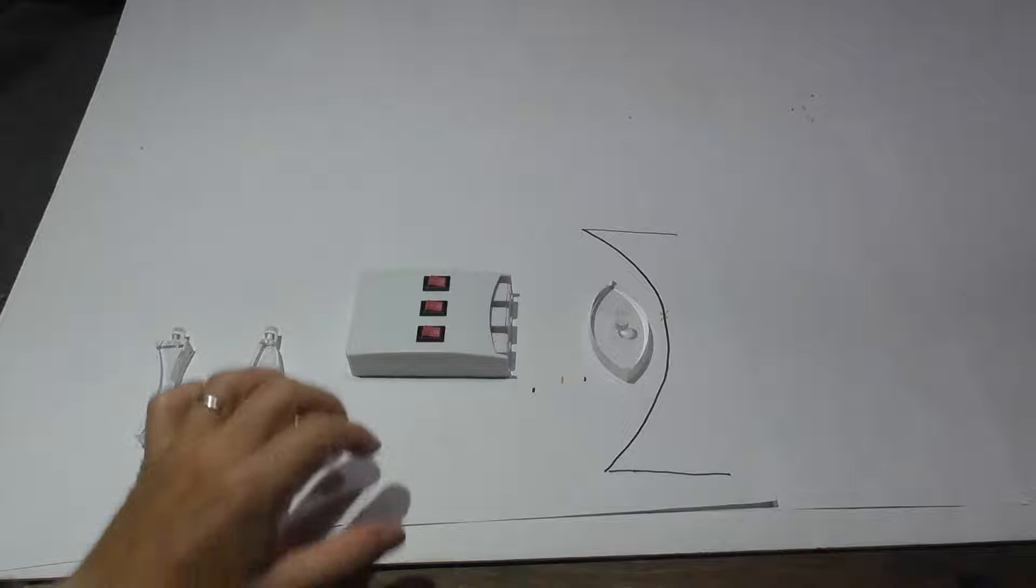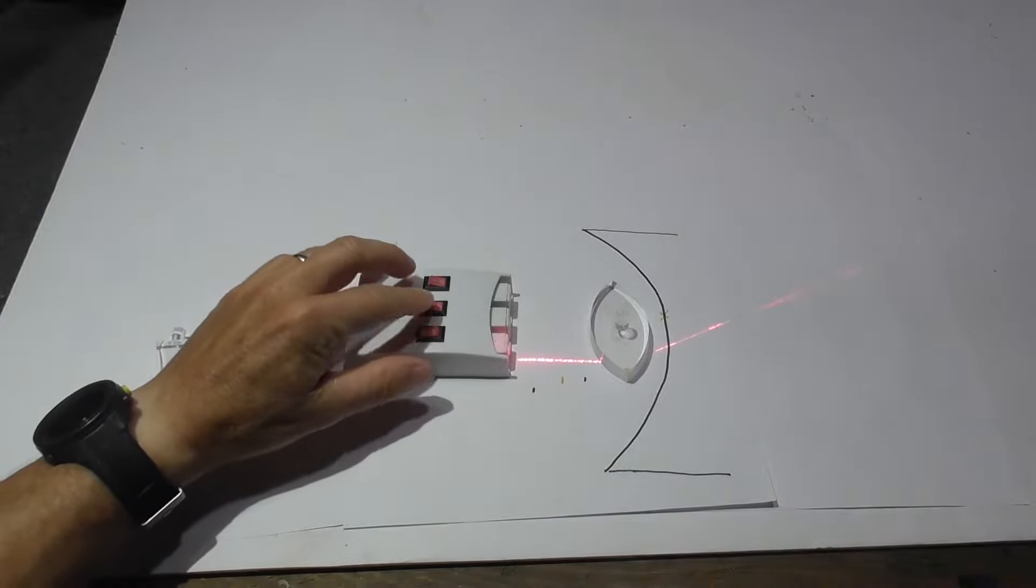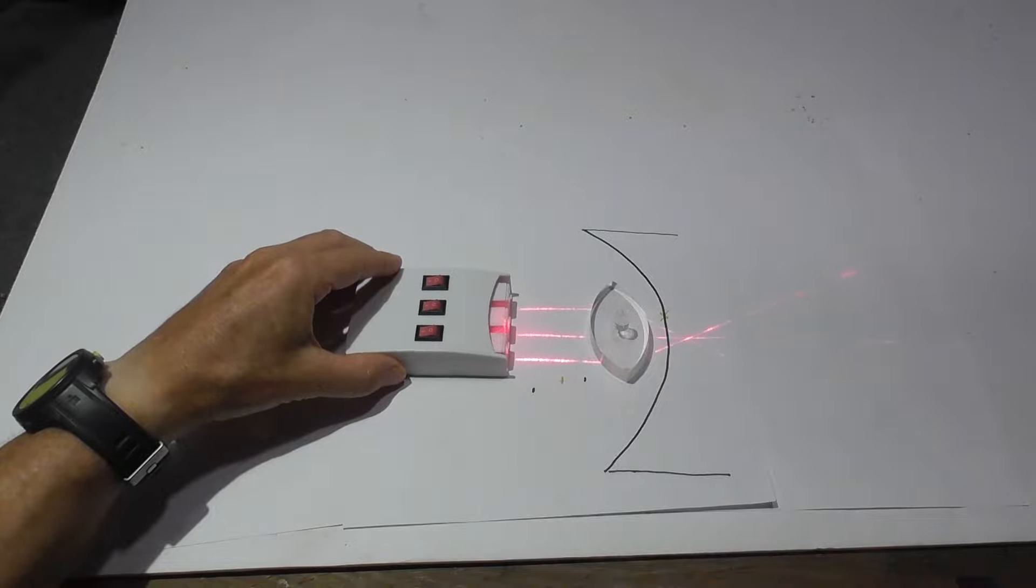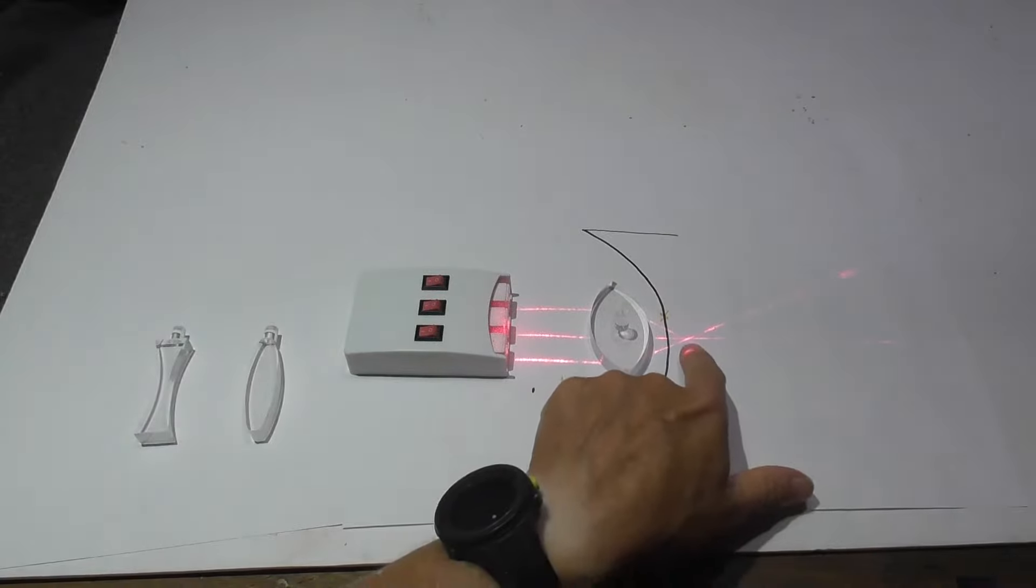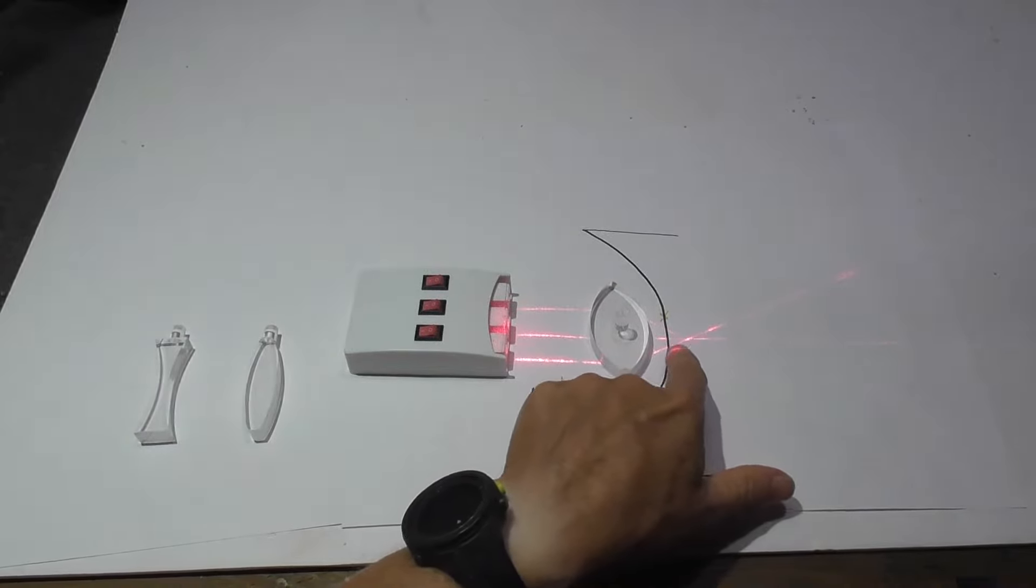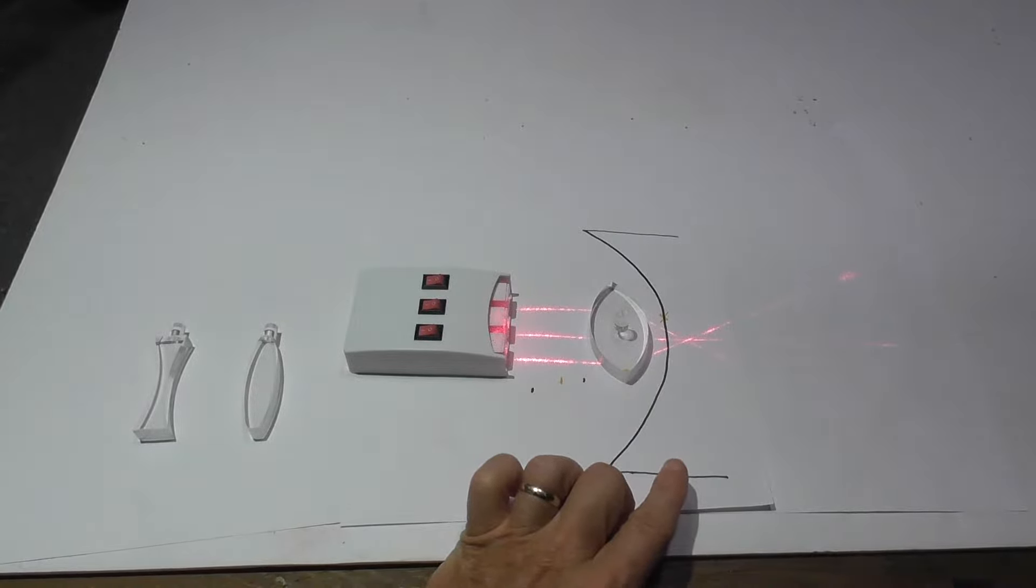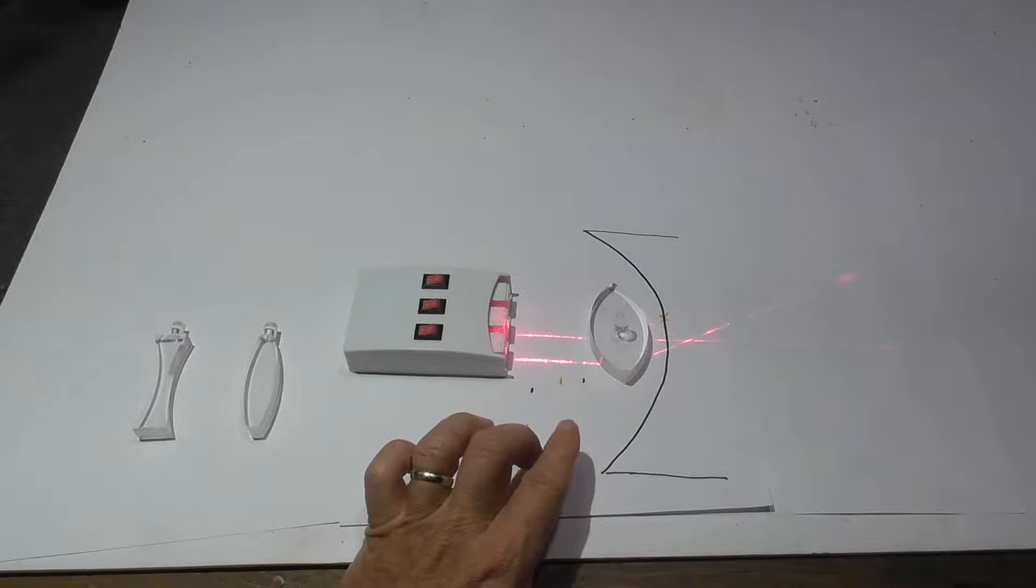Let's take a look at how farsightedness can be corrected. First, as light passes through the lens, when you are farsighted, you can notice that the focal point is beyond the retina. As a result, objects far away will be in focus but objects nearby will seem blurry.